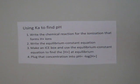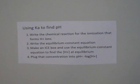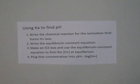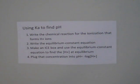Then you would make an ICE table, which stands for Initial, Change, Equilibrium, and use the equilibrium constant equation to find the hydrogen concentration at equilibrium. Then we would plug that concentration into the negative log of the hydrogen concentration to find pH.